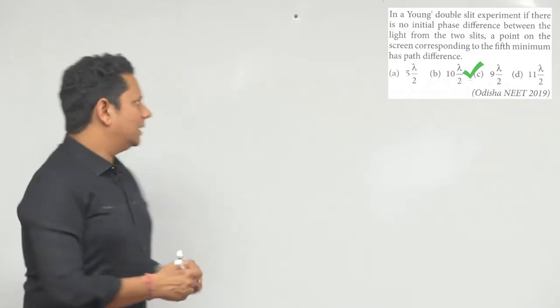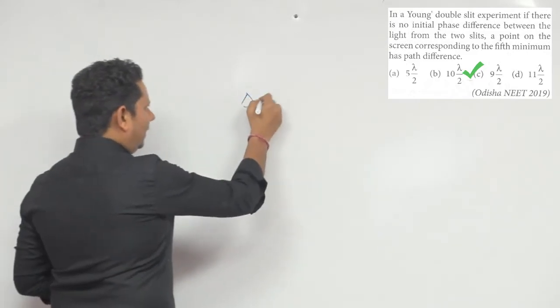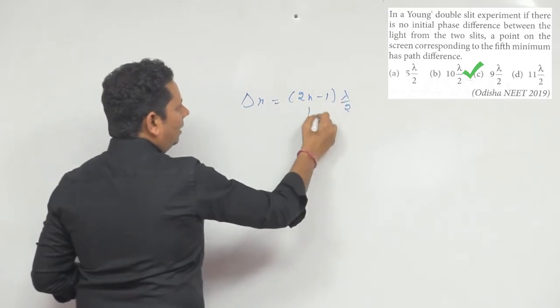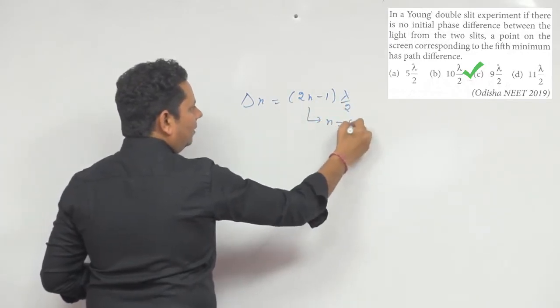The formula they use is delta x equals (2n-1)λ/2. If you use this formula, you'll put n value as 5.